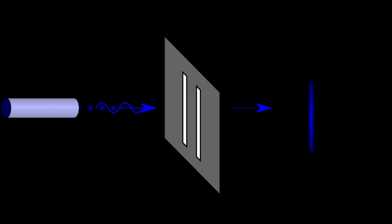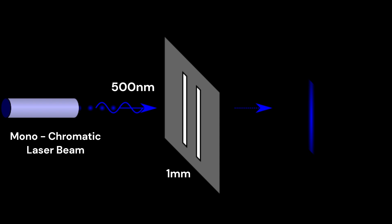The double slit experiment is the very basis of quantum mechanics. In this apparatus we can see two slits or rectangular openings one millimeter apart from each other through which light will be passed. We use a quasi-monochromatic light source — a single laser whose wavelength is 500 nanometers — and a screen kept one meter away from the slits on which the final results are observed. When the laser is shone through the slits, a wave-like interference pattern is observed on the screen.